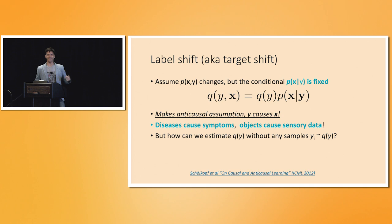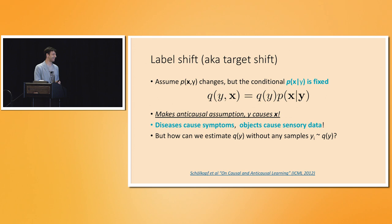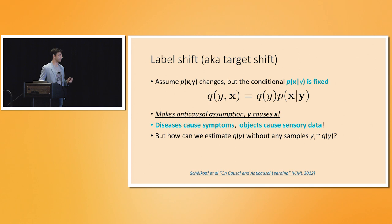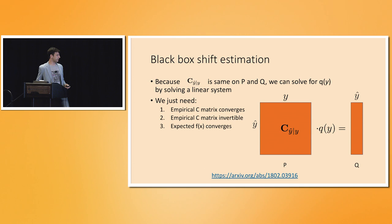Label shift essentially says the label causes the image; covariate shift says the data causes the label. Both assumptions can hold simultaneously — when the labeling function is deterministic, covariate shift always holds. We showed that label shift is generally much easier to work with. Specifically, if you take the confusion matrix of your classifier, each column equals the mean classifier output for a given label, and this confusion matrix is the same in both source and target distributions because P(X|Y) = Q(X|Y).